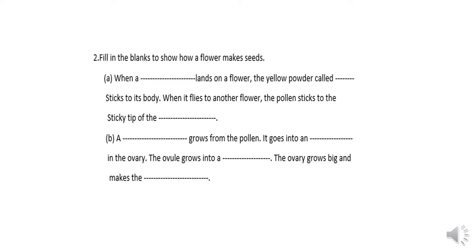The next question is: fill in the blanks to show how a flower makes seeds. Part A: when a bee lands on a flower, the yellow powder called pollen sticks to its body. When the bee flies to another flower, the pollen sticks to the sticky tip of the carpel.